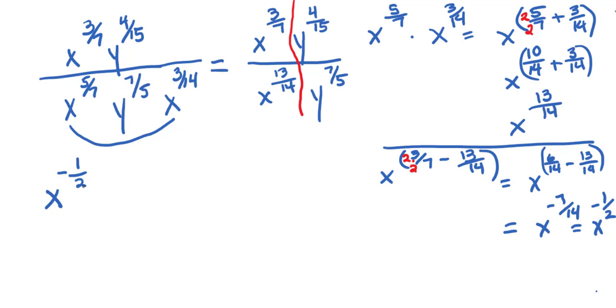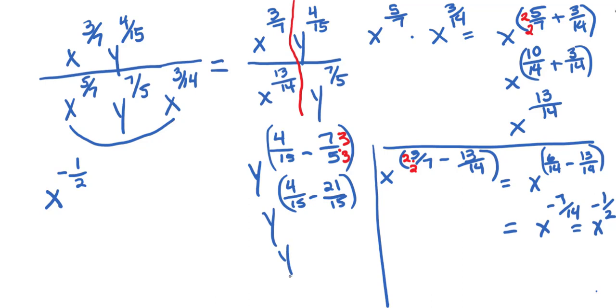For the Y's, maybe I'll do the Y's right here. So I have Y to the 4 15ths minus 7 5ths. I need a common denominator. 15 will work. So this one needs a 3. So I have Y to the 4 15ths minus 21 15ths, which gives me Y to the negative 17 15ths.